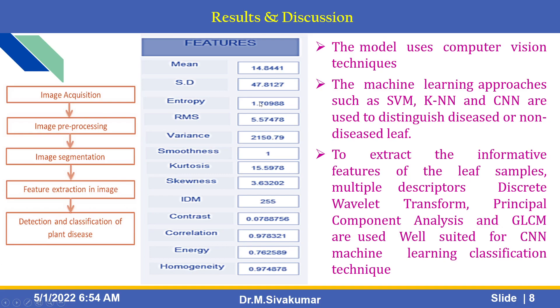This is the output. After execution, you can get the result in the values of mean, SD, entropy, RMS, contrast, correlation, energy, and homogeneity, etc. This model uses computer vision techniques. Machine learning approaches such as SVM, KNN, and CNN are used to classify diseased or non-diseased leaves. DWT, PCA, and GLCM are used to extract informative features for this CNN-based machine learning classification.